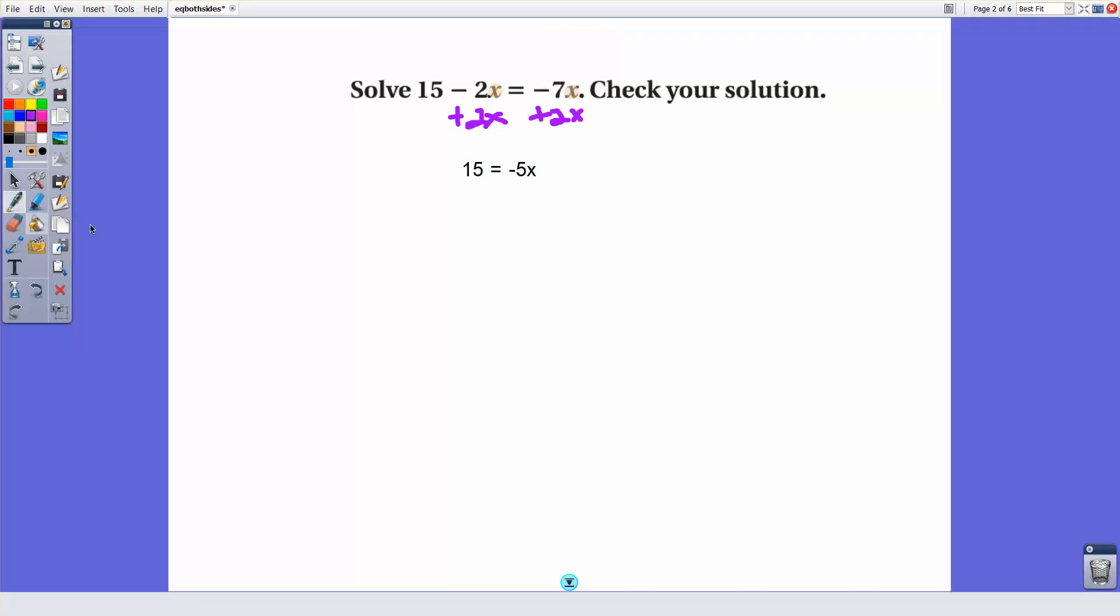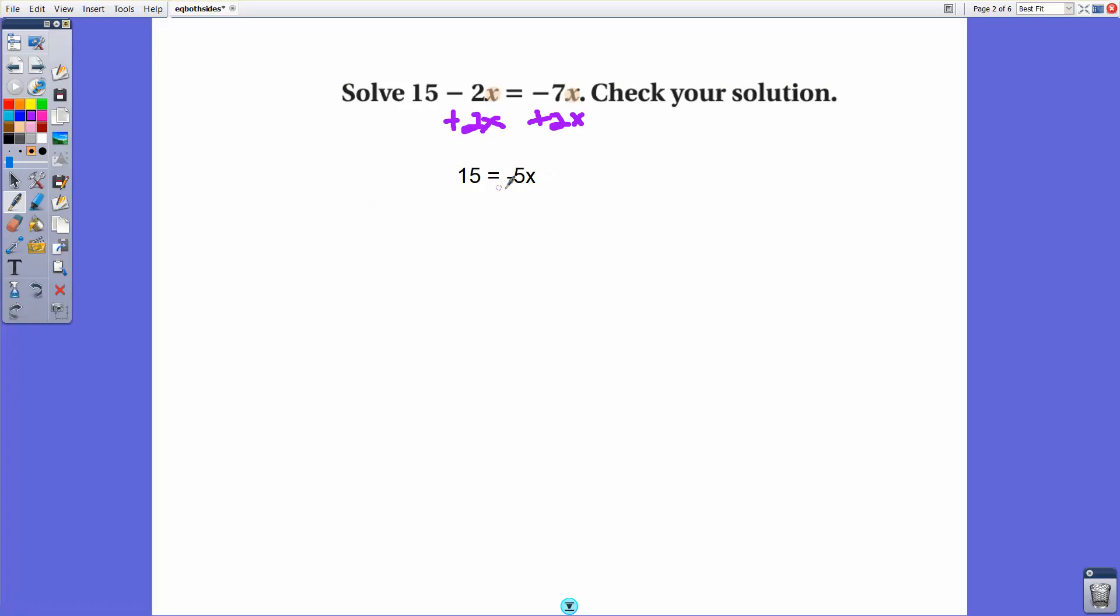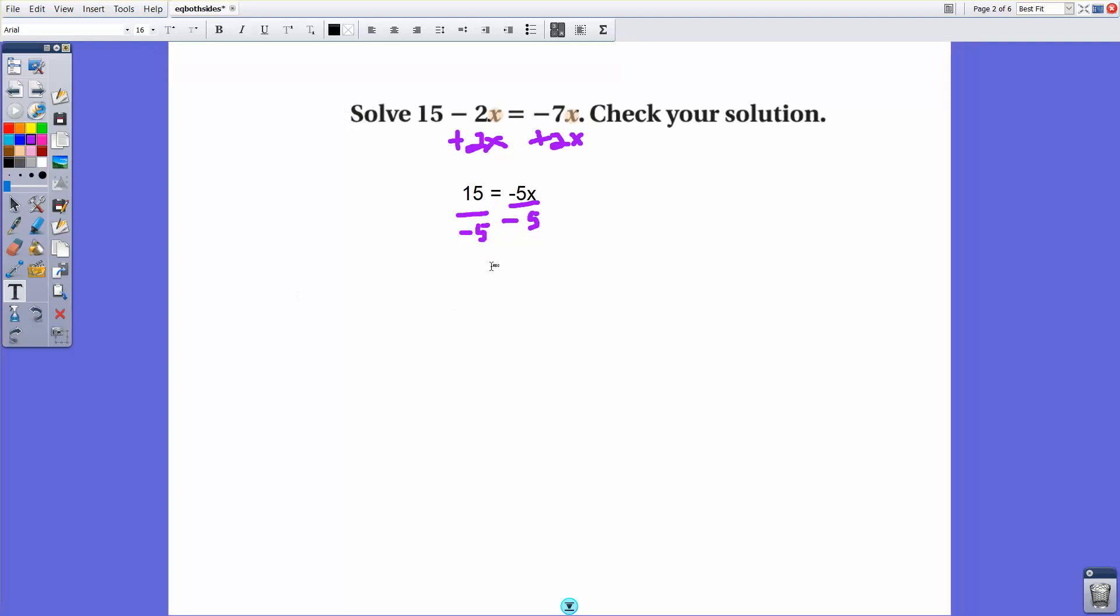Now it's negative 5 times what gives me negative 15? We would divide by negative 5 as our next step. And by doing a division of negative 5, we will get x by itself on the right side. And on the left side, 15 divided by negative 5 is negative 3. So negative 3 equals x.